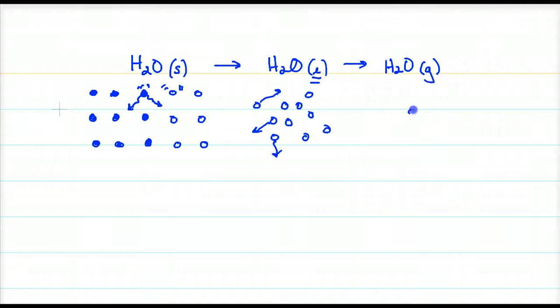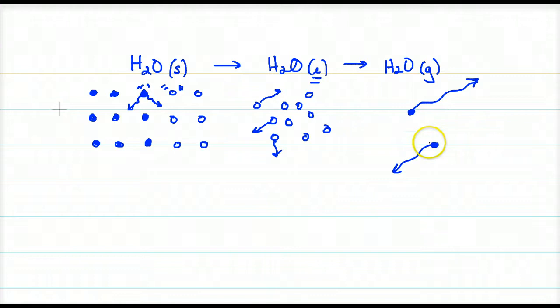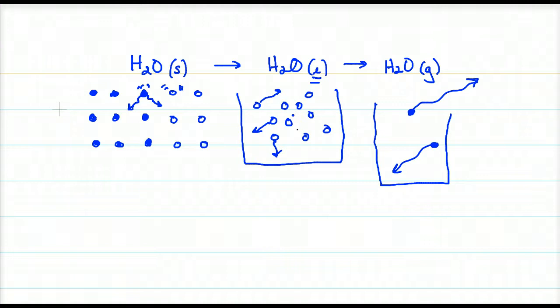Liquids and gases have tremendous energy where they're flying around with very little attractive forces. They travel upwards of hundreds of miles an hour — up to the speed of sound. These molecules, having no attractive forces, can fly out of a container and not stay there. Liquids have greater energy than a solid but are still stuck in the container because they still have significant attractive forces.